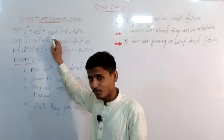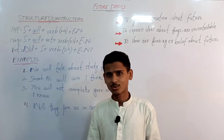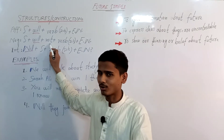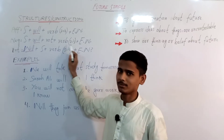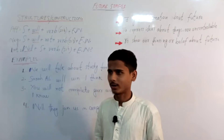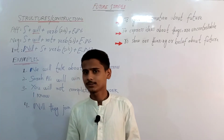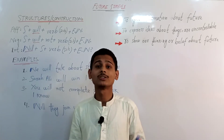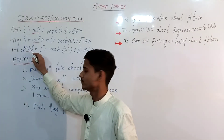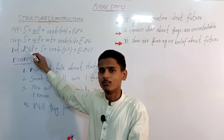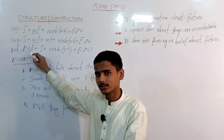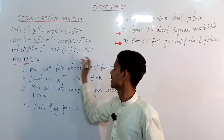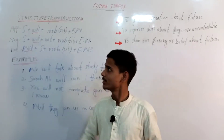Continuing: the affirmative is subject plus 'will' plus the first form of the main verb, then an extra word or object. The negative structure is subject plus 'will' plus 'not' to show negation, plus the first form of the verb, then extra word. For the interrogative, as I mentioned in the last part, we bring the modal auxiliary verb to the front to make a confirmative question. So: 'will' plus subject plus first form of verb plus extra word.